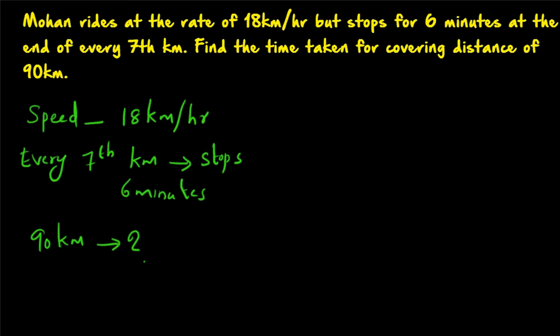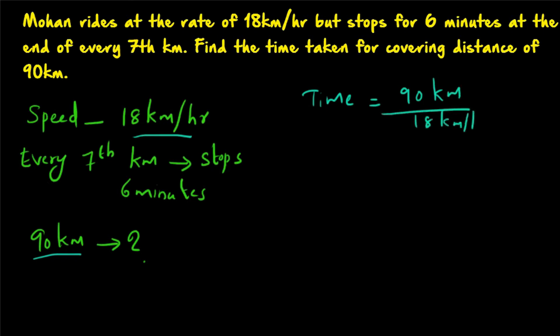First, we find the time taken to cover 90 km using the direct formula, assuming he is not stopping at all. If that were the case, the time taken would be 90 km divided by 18 km per hour, which equals 5 hours. So 5 hours is his travel time — he is moving at the speed of 18 km per hour, and 90 divided by 18 gives 5 hours.